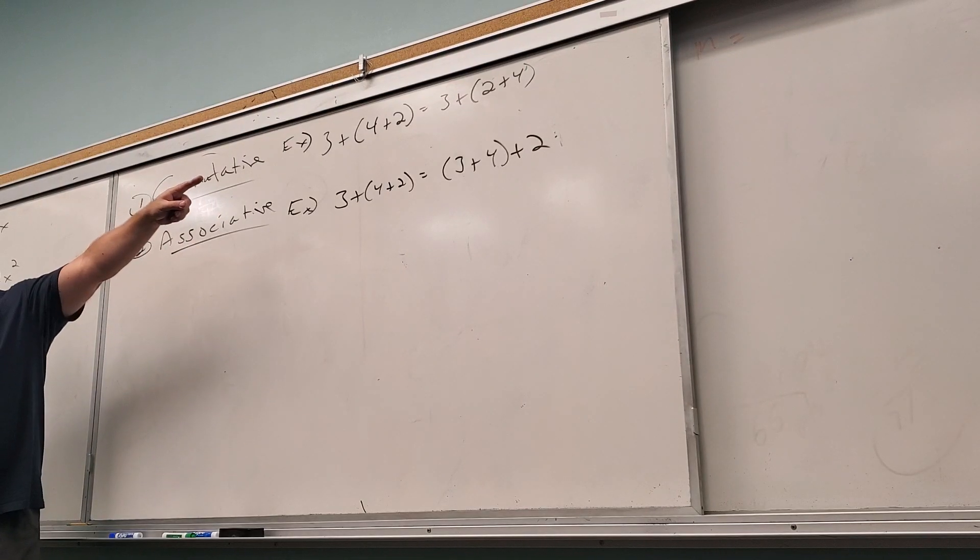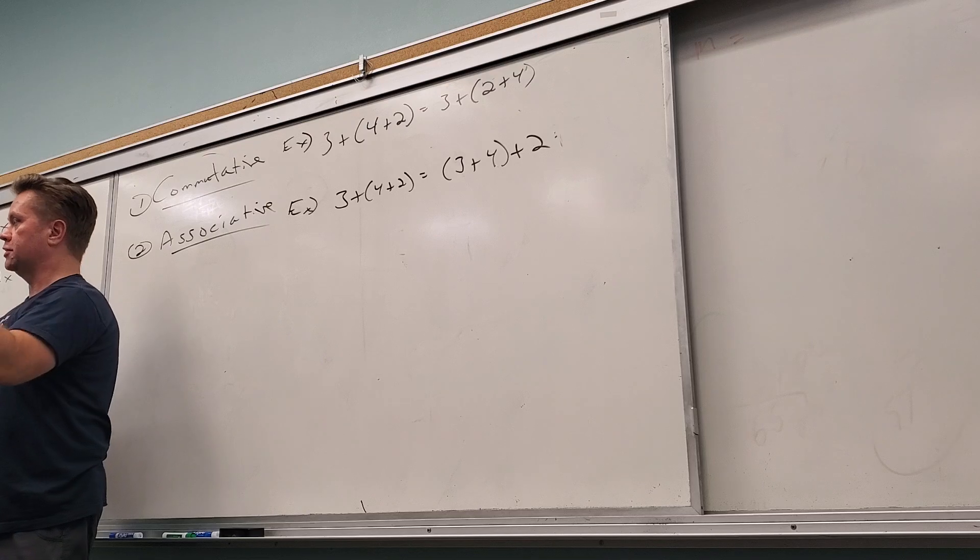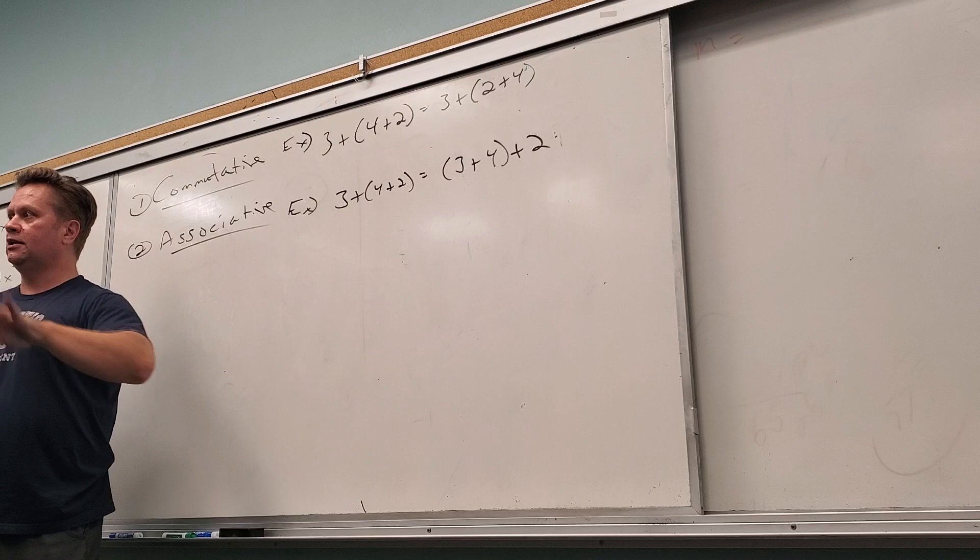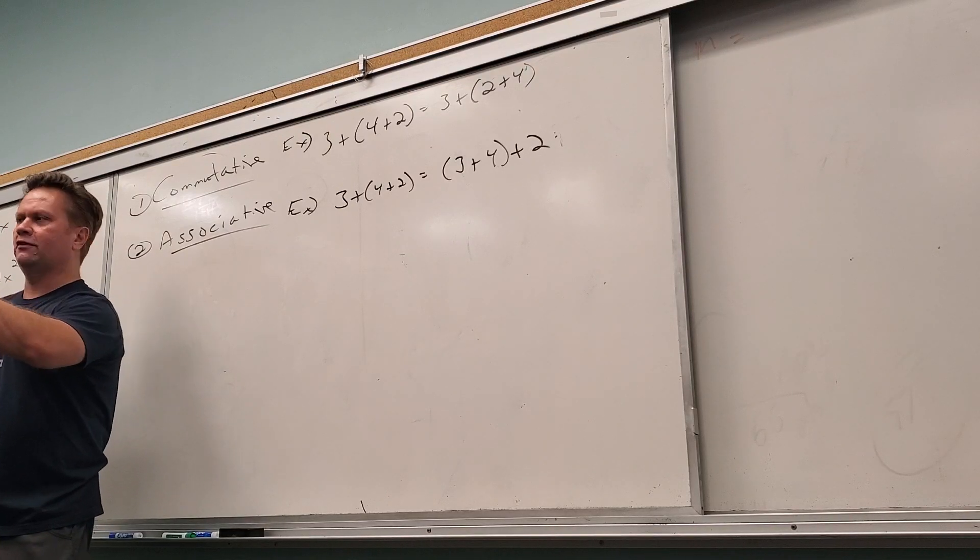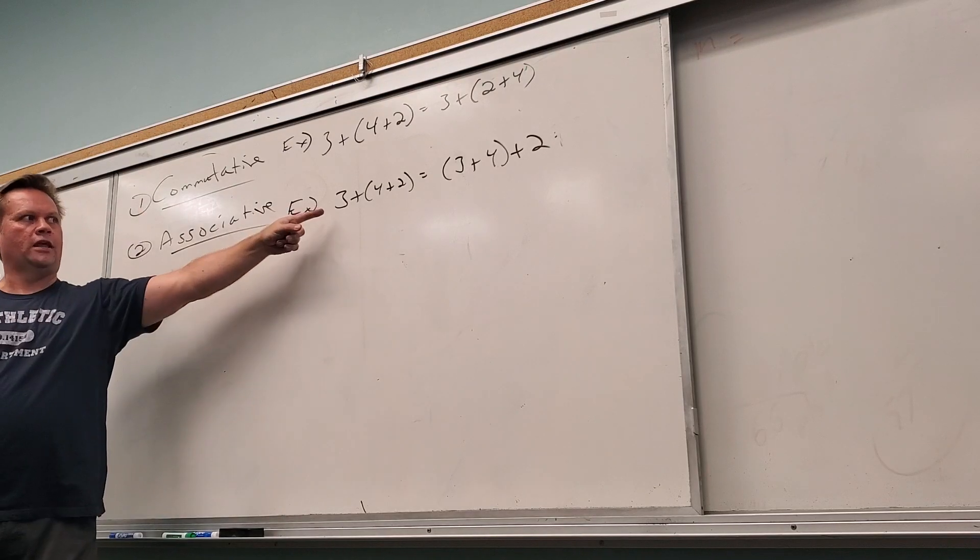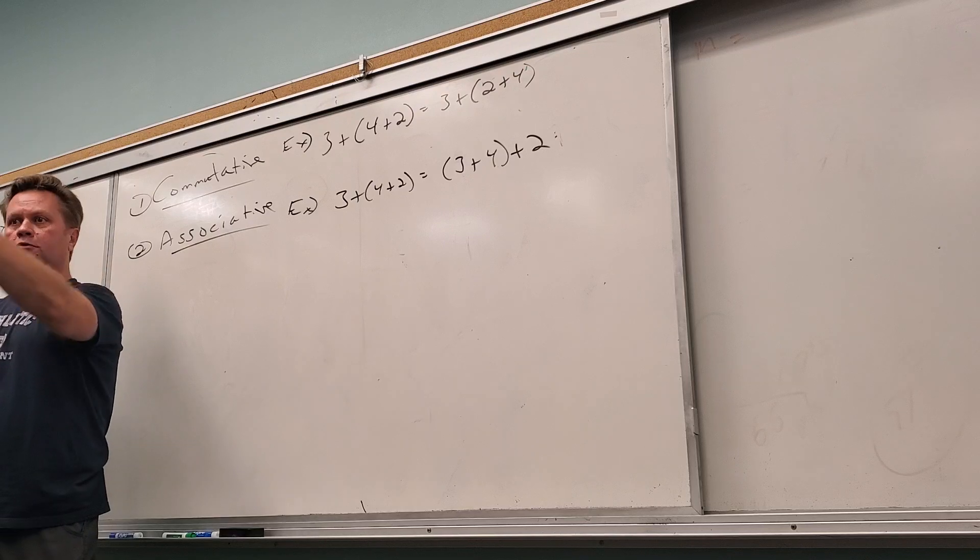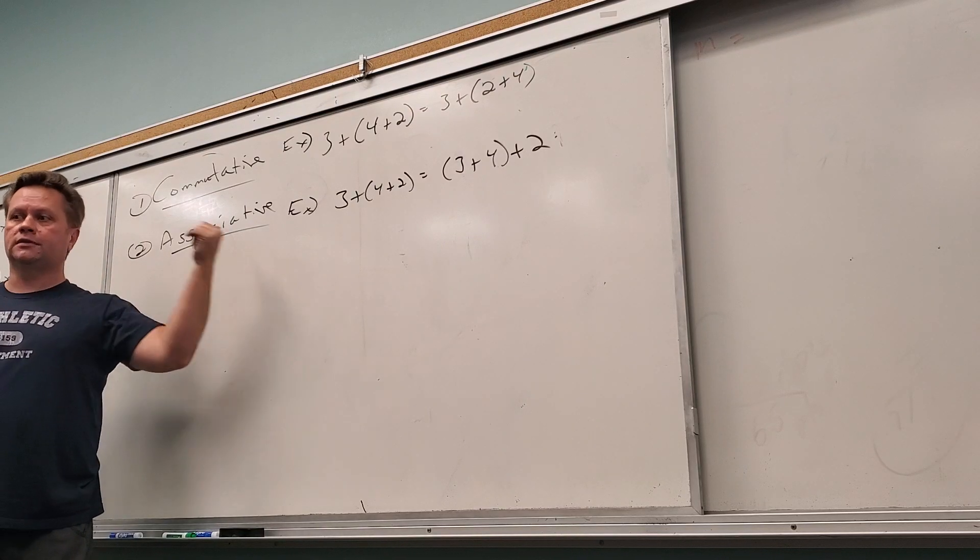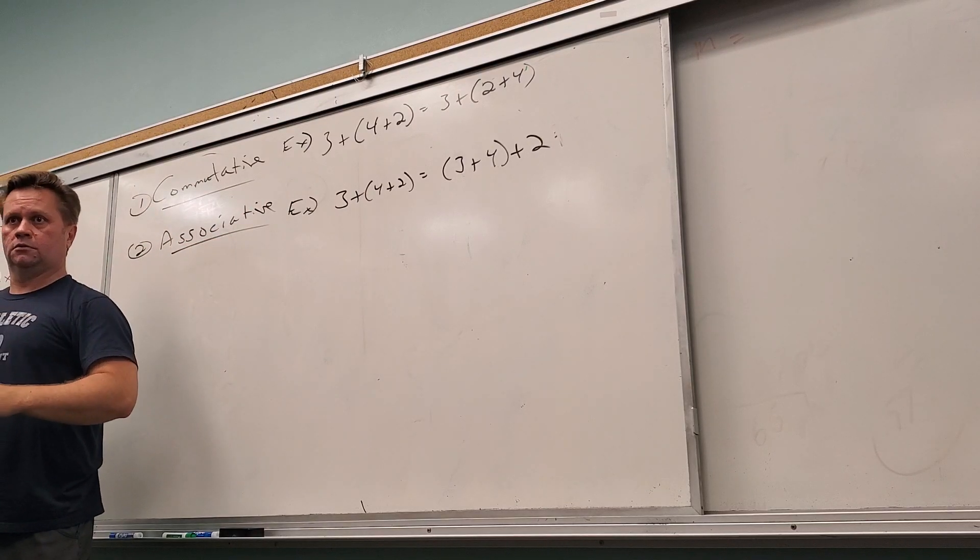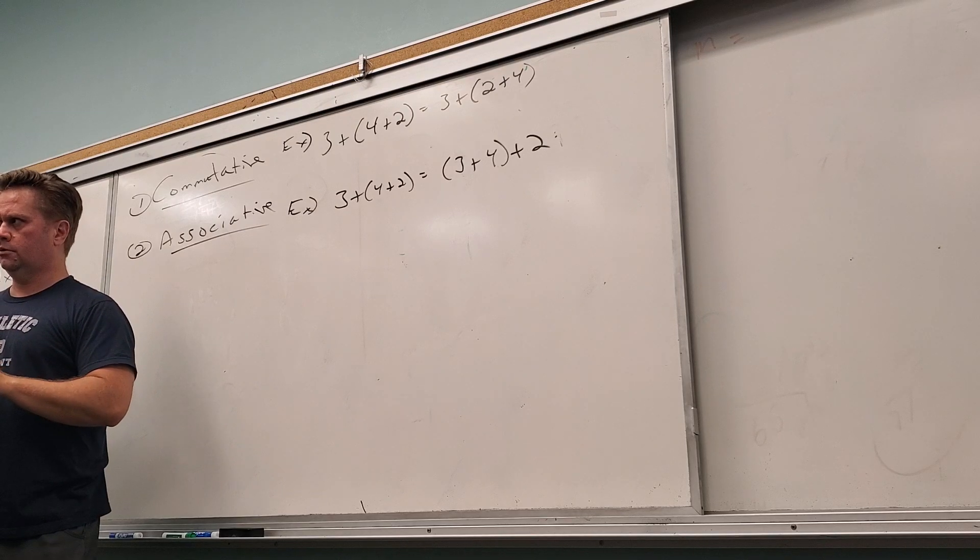Commutative - what moved from one side to the other? What moved? The individual numbers. Individuals. What did you guys do this morning? You started somewhere and you commuted here. Individuals commute. What happened here? What moved? The parentheses got up and moved. Parentheses associate. Individuals commute. Parentheses associate. That's just a way to remember which property means which.